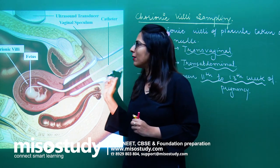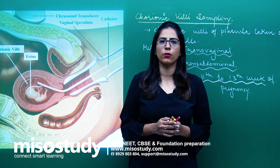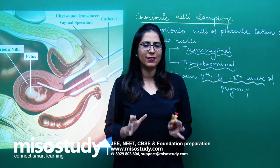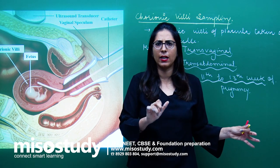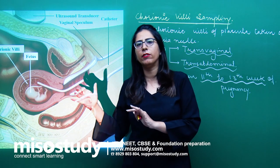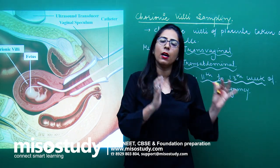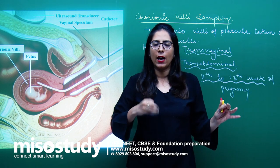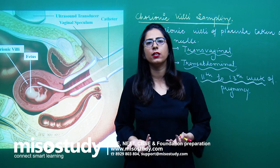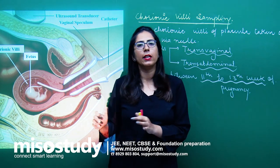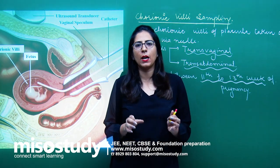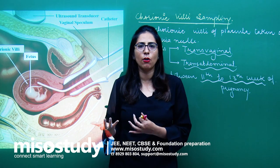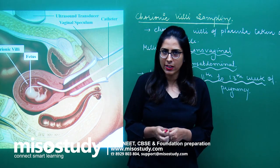So these are the two different methods: chorionic villi sampling and amniocentesis. Amniocentesis is done around the 14th to 15th week of pregnancy, where amniotic fluid is taken out via a transabdominal needle. Chorionic villi sampling is done at the 11th to 13th week of pregnancy, and can be either transvaginal or transabdominal. The chorionic villi cells, which carry the baby's genetic information, are sent to the laboratory and diseases such as Down syndrome and other chromosomal abnormalities can be easily detected.